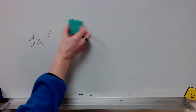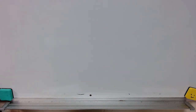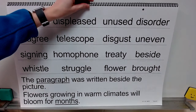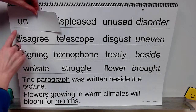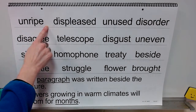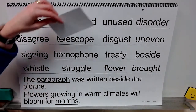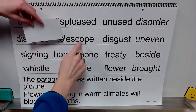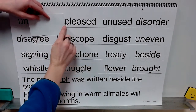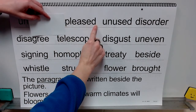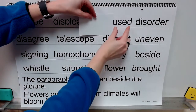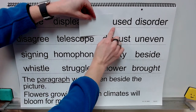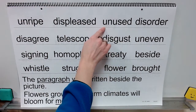Now let's read some words. Prefix un, base word ripe, word unripe. Prefix dis, here's our base word that has an ending. What is this base word? Pleased. Displeased. Prefix un, here is our base word with an ending. What is that word? Used. Whole word unused.